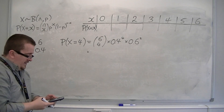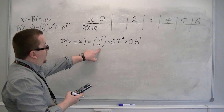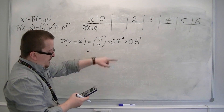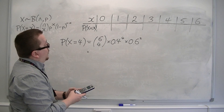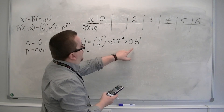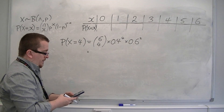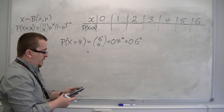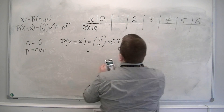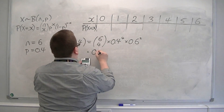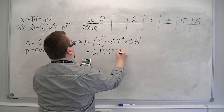I could plug that into the calculator — 6 choose 4 is 15, times by 0.4 to the power of 4, times by 0.6 squared. And you get 0.13824.